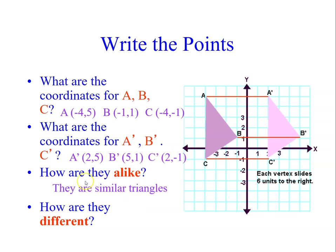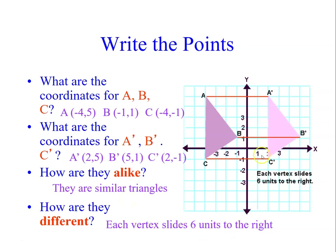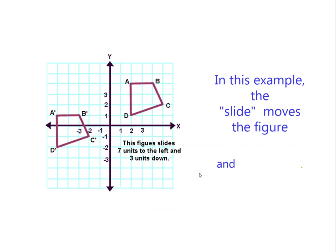How are they alike? They are similar triangles — there are no changes of the shape of the triangle. How are they different? Each vertex now slides six units to the right, so the vertex positions are different. It is also an example of how the slide moves the figure — from quadrant one, it moves there.